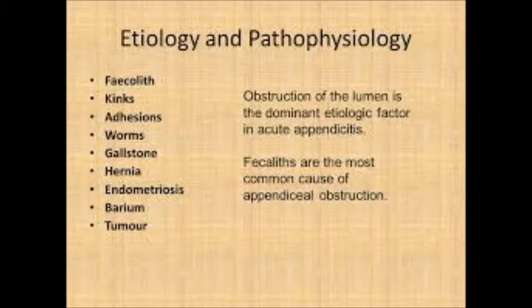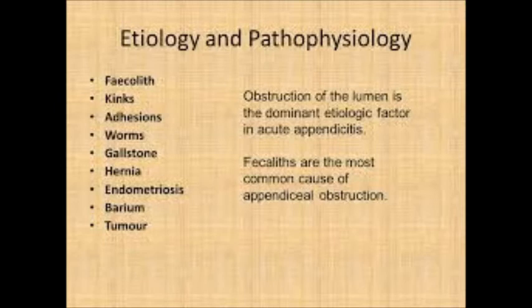Regarding etiology, it may be related to diet. A diet rich in meat precipitates appendicitis, while a diet rich in fiber protects from appendicitis. Appendicitis is a disease of rich and middle-class people and is not common in poor people. There are two theories: obstructive theory and non-obstructive theory. The obstructive theory indicates that a faecolith or cyst of Entamoeba causes obstruction to the lumen of the appendix.